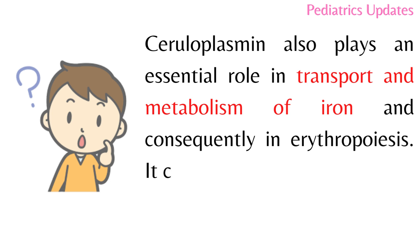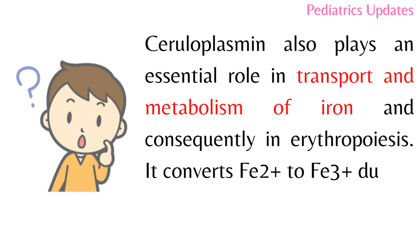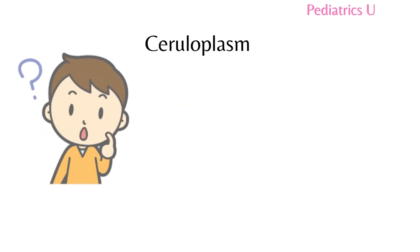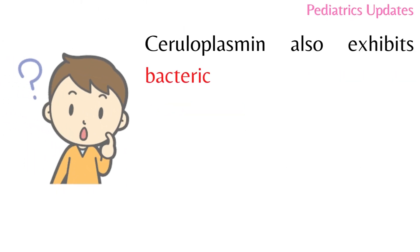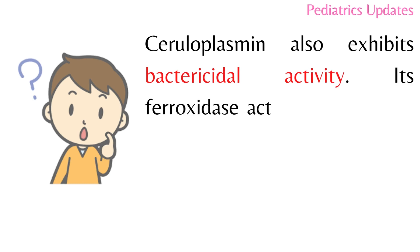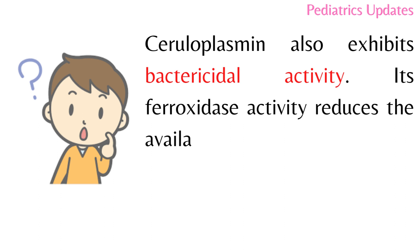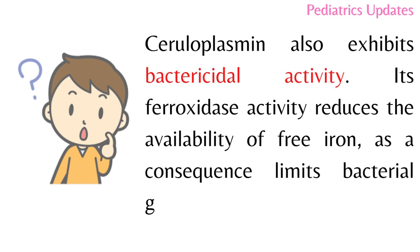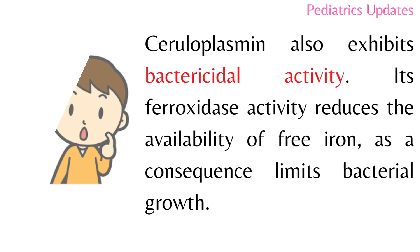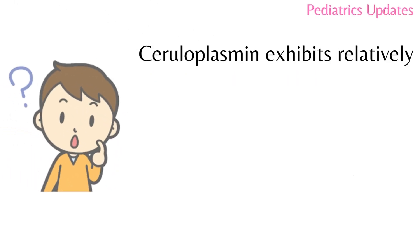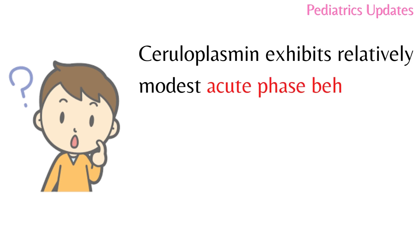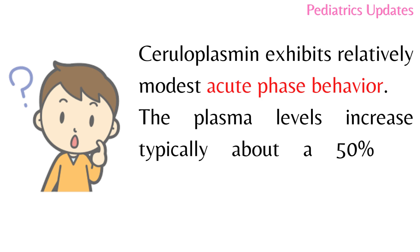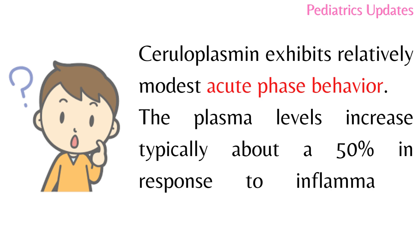And consequently in erythropoiesis, it converts ferrous ion to ferric iron due to its ferroxidase activity. Ceruloplasmin also exhibits bactericidal activity — its ferroxidase activity reduces the availability of free iron and consequently limits bacterial growth.